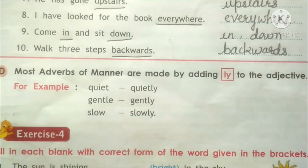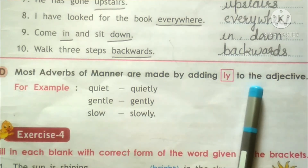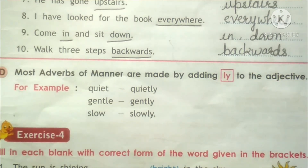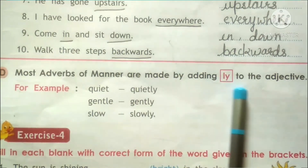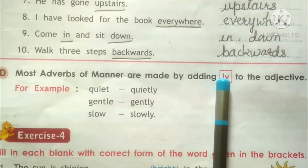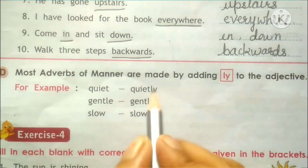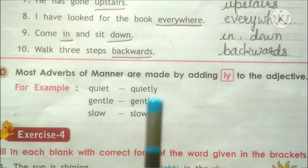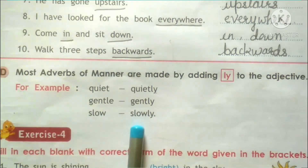Now see here: most adverbs of manner are made by adding -ly to the adjectives. So koi bhi adverbs of manner mein ly aata hai adjective ke baad. Most of the adverbs of manner have -ly: quiet — quietly, gentle — gently, slow — slowly.